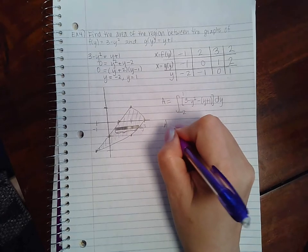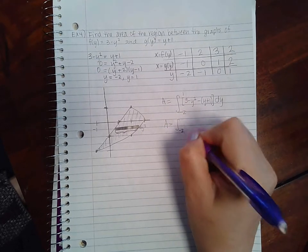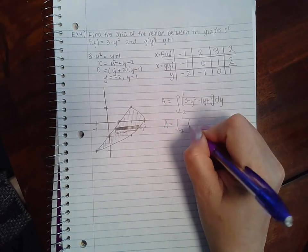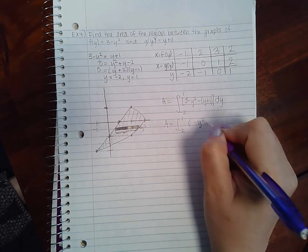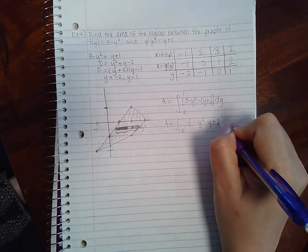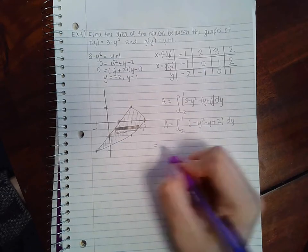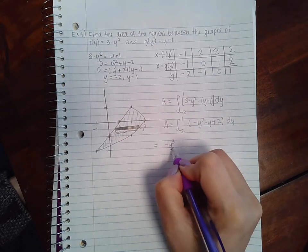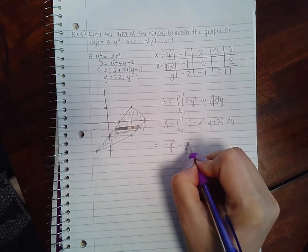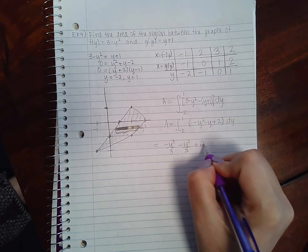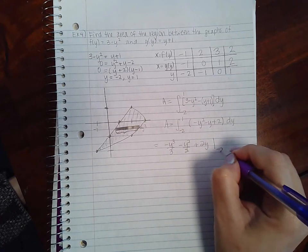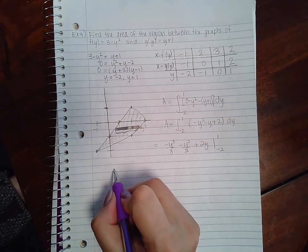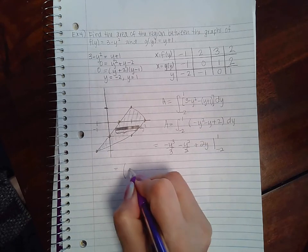If I do a little algebra inside there, we end up with -y² - y + 2. Then if we integrate, we get -y³/3 - y²/2 + 2y evaluated from -2 to 1.